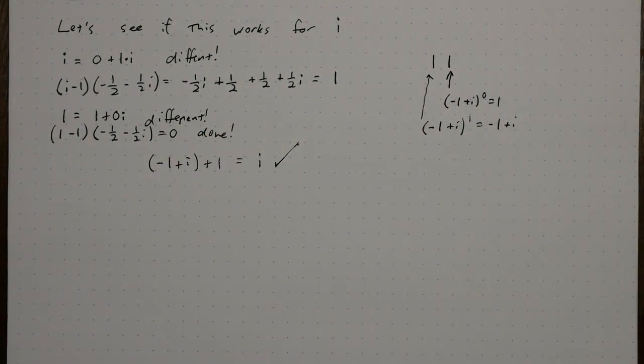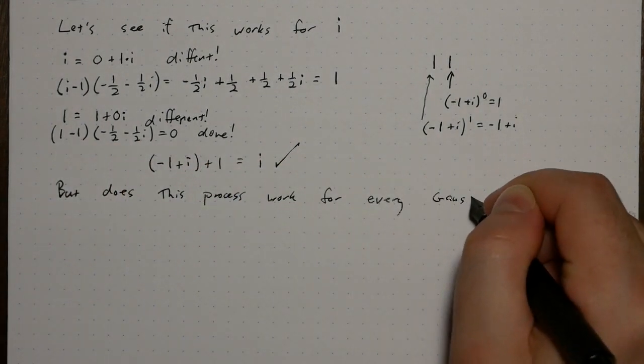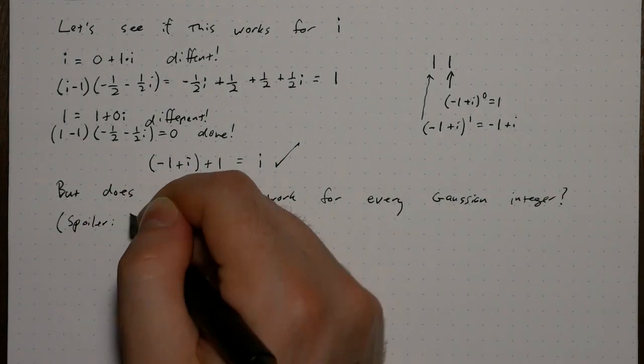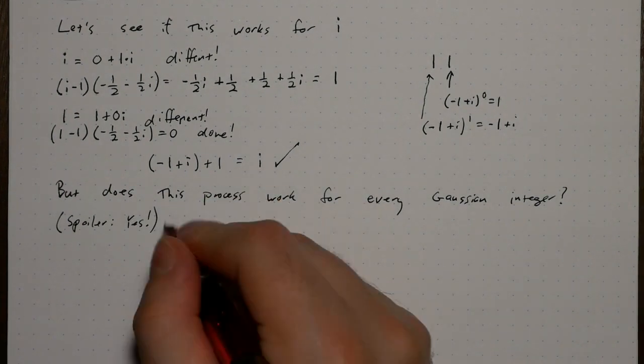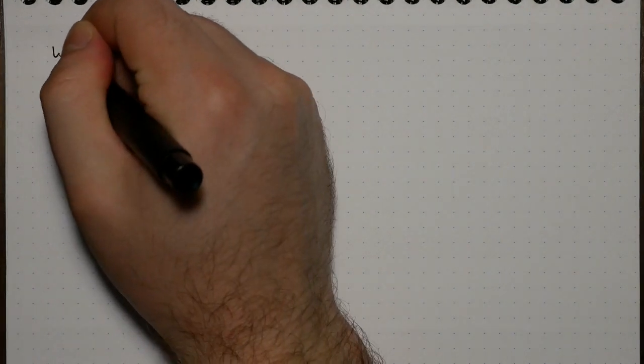But does this process work for every Gaussian integer? Well, yes, otherwise I wouldn't be doing this video. But it needs proof. Positive 1 plus i is actually extremely similar, but it ends up not working. So how do we prove it?